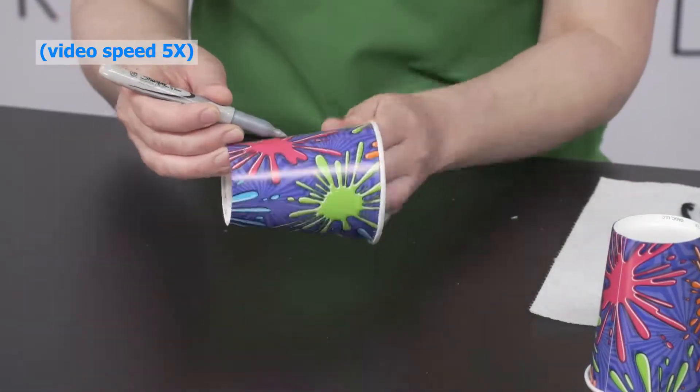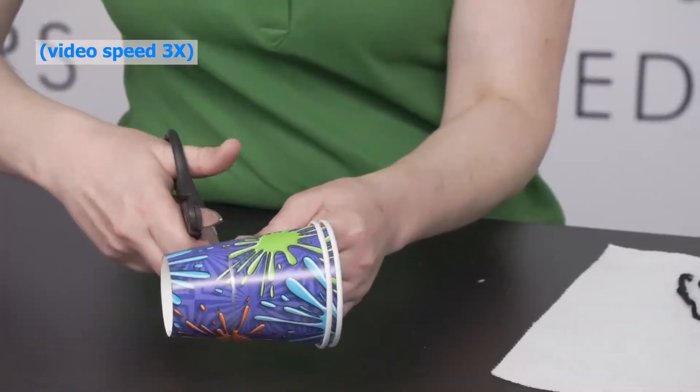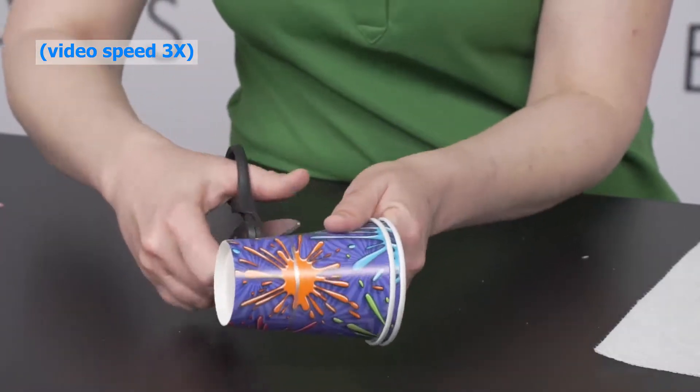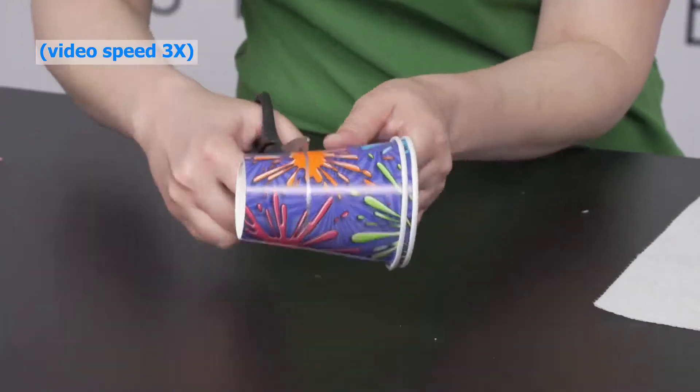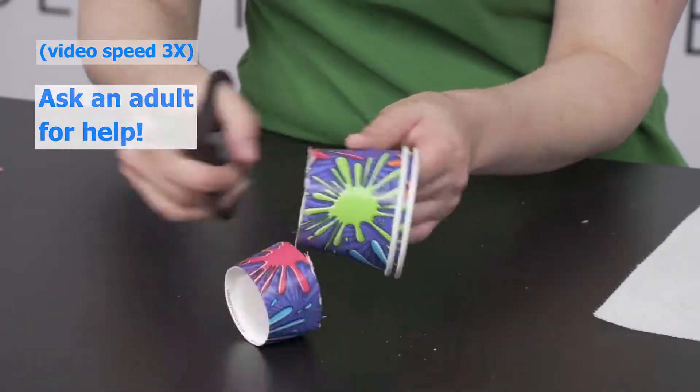Begin by tracing a circle around the outside of the bottom of one of the cups using the marker. Next, stack the two cups and cut through both cups using the scissors following the traced line. You may need an adult to help you with this part just for safety reasons.